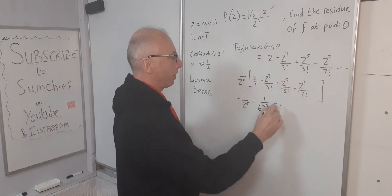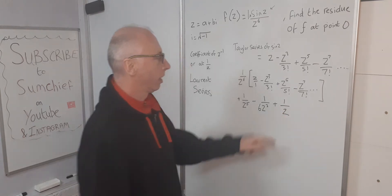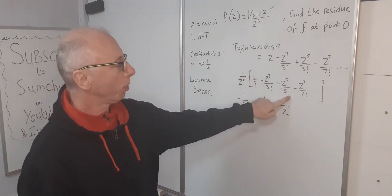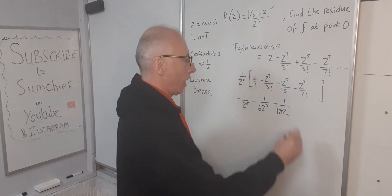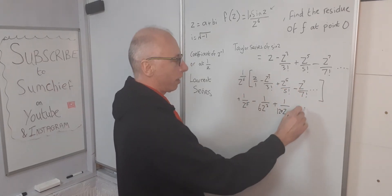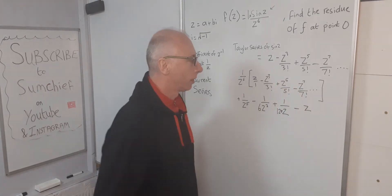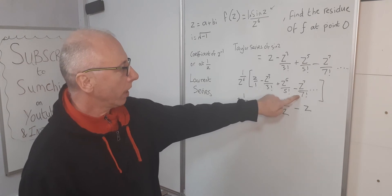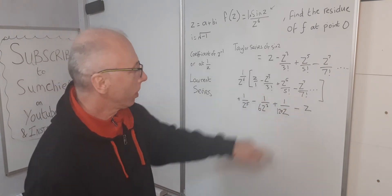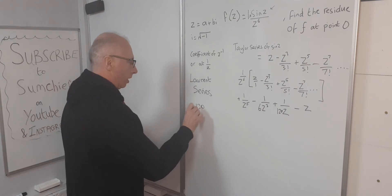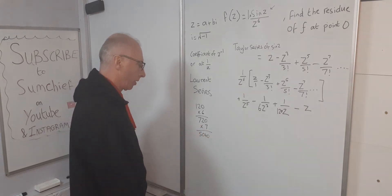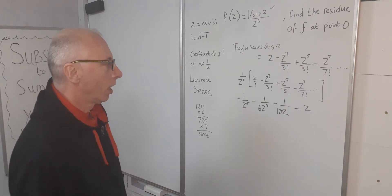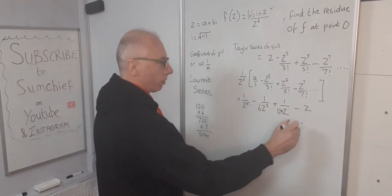z to the 5 divided by z to the 6 gives us 1 over z. 5 factorial is 1 times 2 times 3 times 4 times 5, which is 120. Then minus z to the 7 over z to the 6 would just be z, and the coefficient is 1 over 7 factorial which is 120 times 6 times 7, which equals 5,040. This goes on and on.